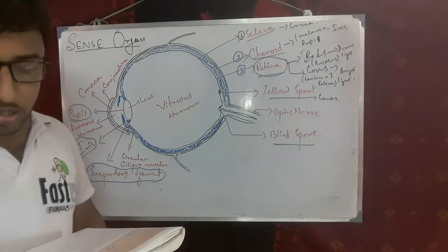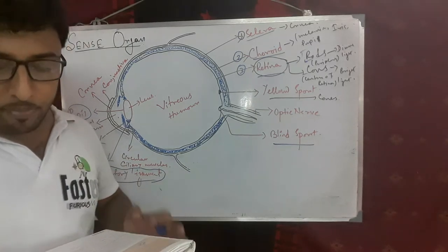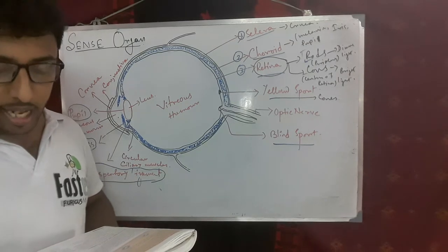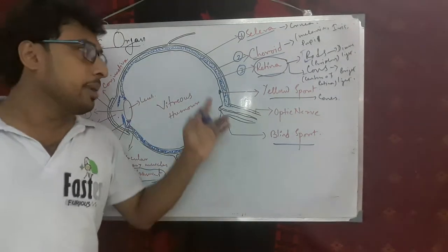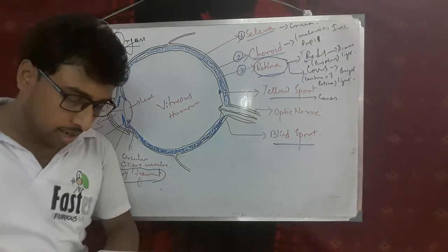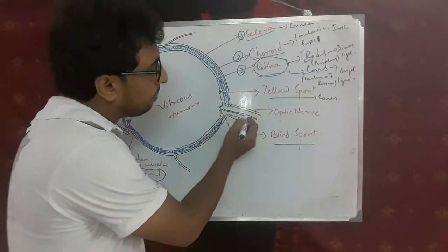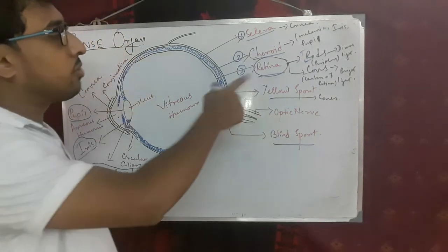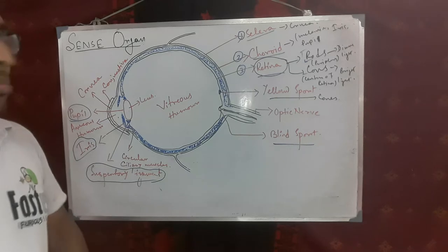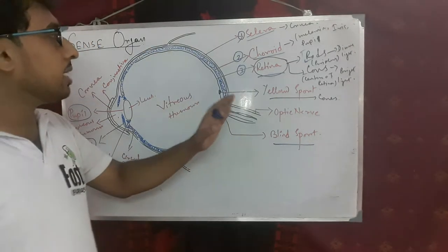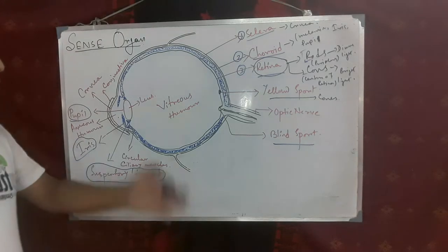Point three: transmission of nerve impulse from retina to brain. The optic nerve is present at the retina, so the nerve impulse travels from the retina to the brain via the optic nerve. Point four: interpretation by the brain. The brain interprets the signal, determines what the object is, and sends signals back. This is how we can see objects clearly. The complete process of vision involves entry of light, focusing, nerve transmission, and brain interpretation.